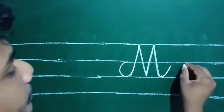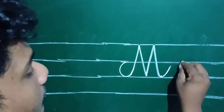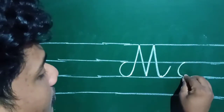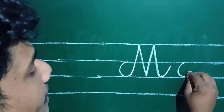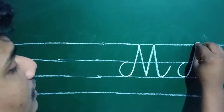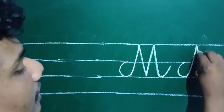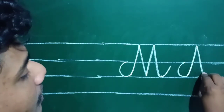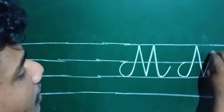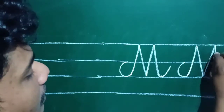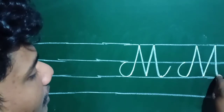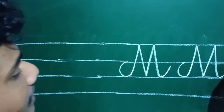Capital letter M — once again. Draw like this, then go up, go down, go up, go down. This is capital letter M.